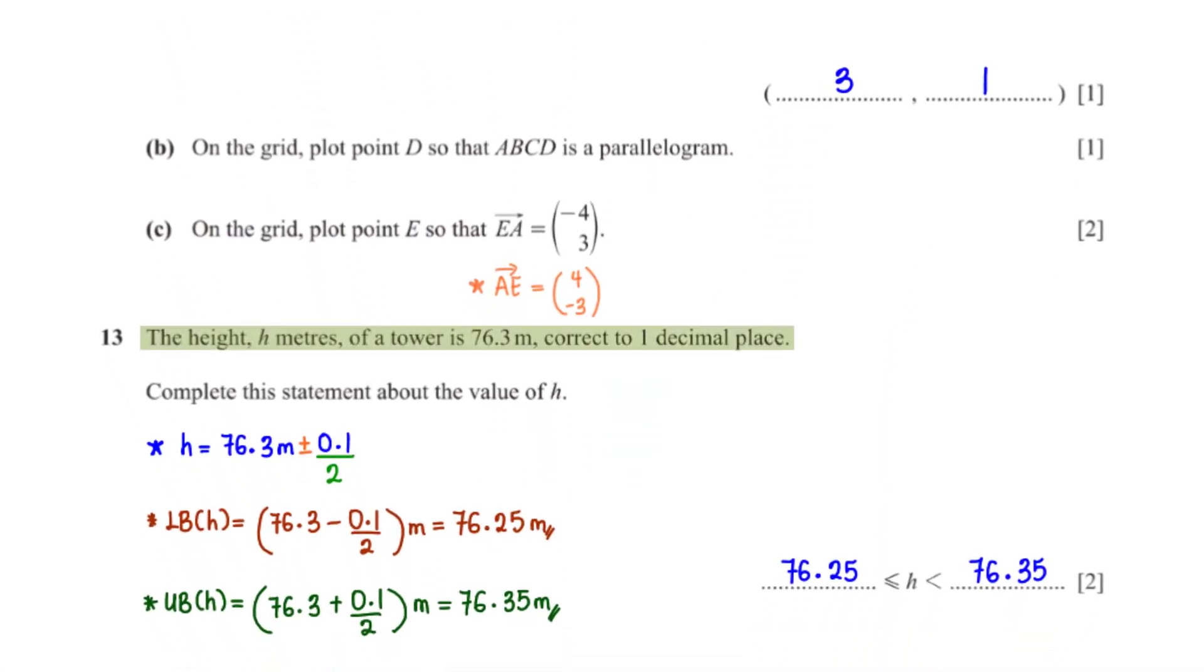The height h meters of a tower is 76.3 meters correct to 1 decimal place. Complete the statement about the value of h. Since we are correcting h to 1 decimal place, we have 76.3 meters. Then, we bring in plus and minus 0.1. Then, we divide 0.1 by 2. So, for the lower bound of h, we have 76.3 minus 0.1 over 2 meters, which is equal to 76.25 meters. So, h is greater than and equal to 76.25 and less than 76.35.